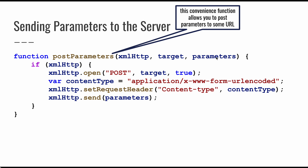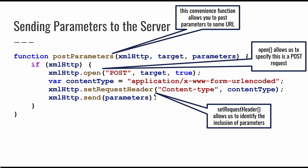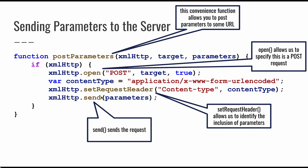We set the request header with content type `application/x-www-form-urlencoded`, meaning we're going to send URL-encoded form parameters to the server, then call `send`. This is a convenience function — all we need to do is take the XMLHttpRequest object, the target URL, and the information we want to send, and this handles the sending. We'll show you how to format that parameter string.